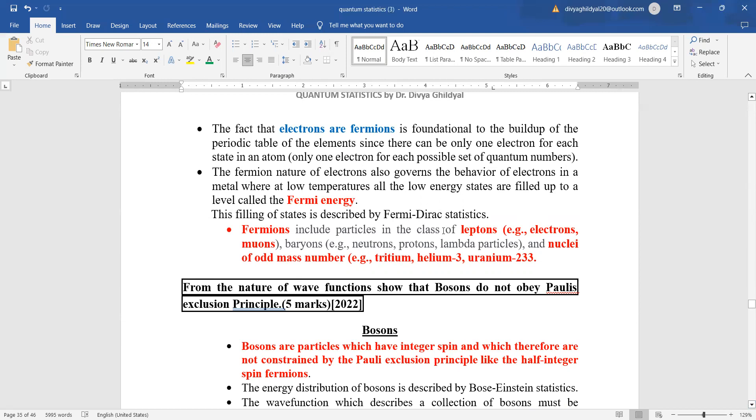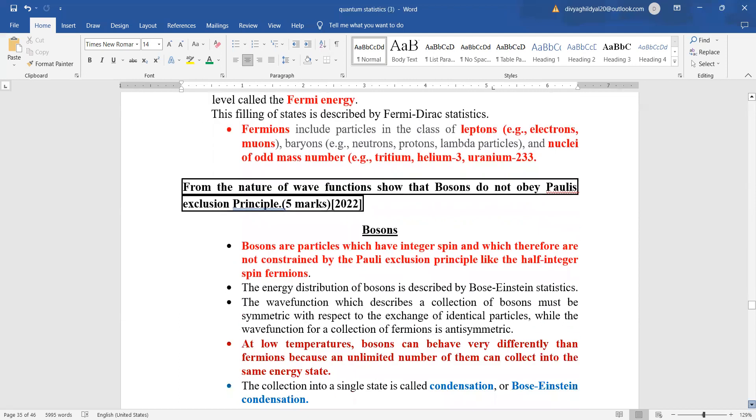Fermions include particles in the class of leptons, example electrons, muons, baryons, and nuclei of odd mass number. Now, from the nature of wave function show that bosons do not obey Pauli's exclusion principle.